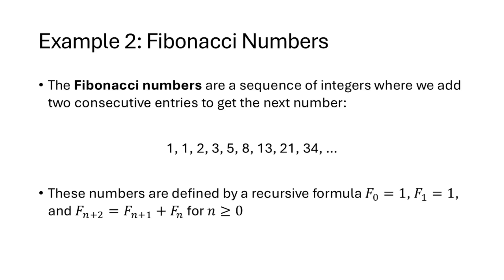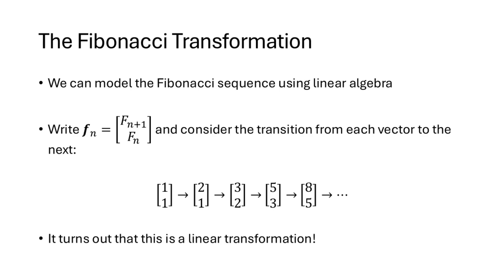One application of diagonalizability is computing large powers of a matrix, and we can see this with the Fibonacci numbers. The Fibonacci sequence is defined by adding two consecutive entries to get the next one: starting with 1, 1, then 2, 3, 5, and so on. We can model this using linear algebra with vectors containing two consecutive Fibonacci entries, shifting the upper number to the lower position and adding both entries to get the new top number — producing a new pair of consecutive Fibonacci numbers at each step.